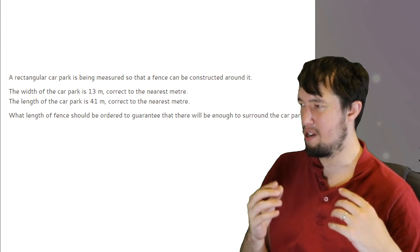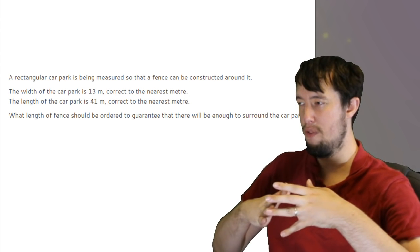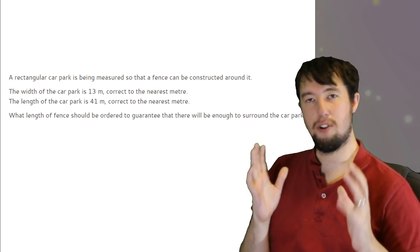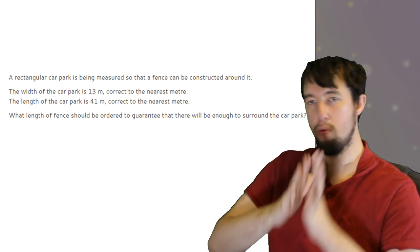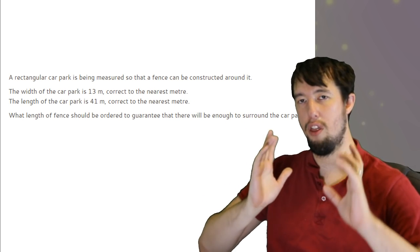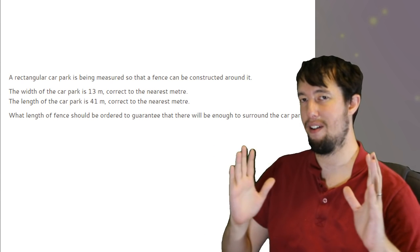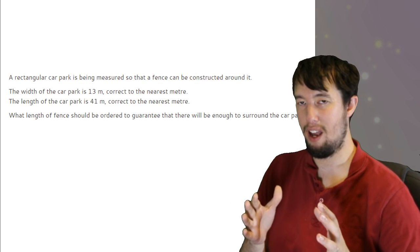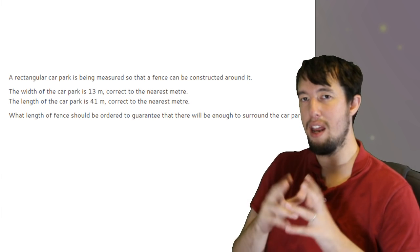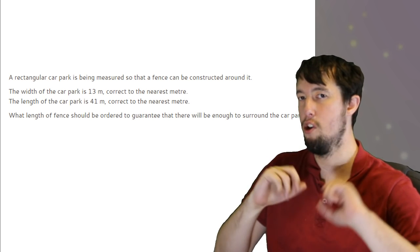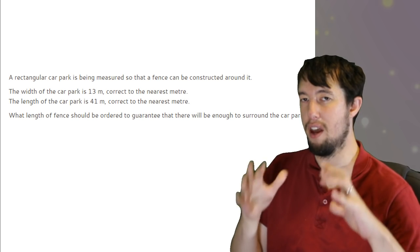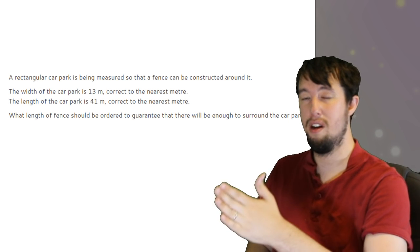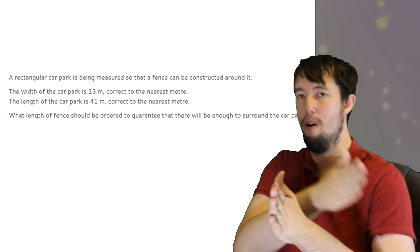This says 13 meters correct to the nearest meter. The lower bound of that value is 12.5. The upper bound is 13.5. I've talked about this before. Don't go down the road of 13.49 recurring, otherwise it makes it a nightmare to work out any calculations. 13.49 recurring is the same as 13.5. There is no difference between those numbers. So saying 13.49 recurring is not more correct than 13.5. They are the same number.